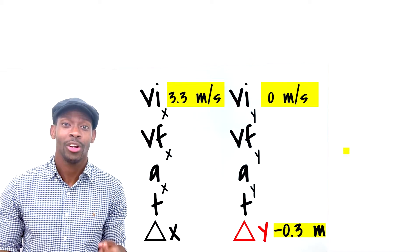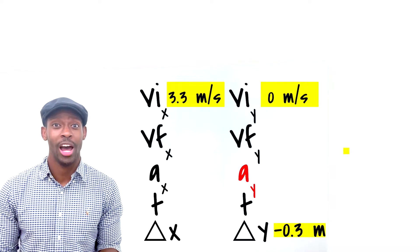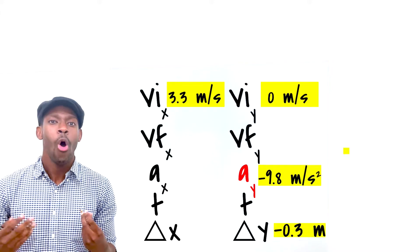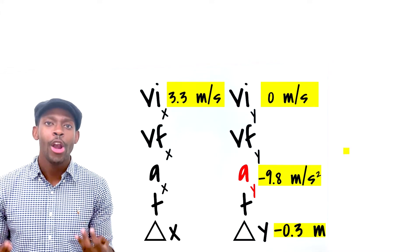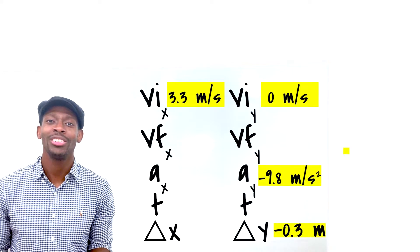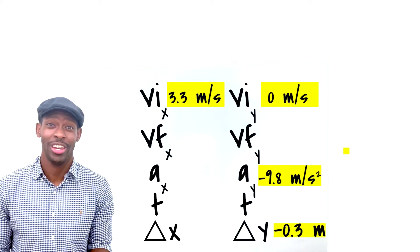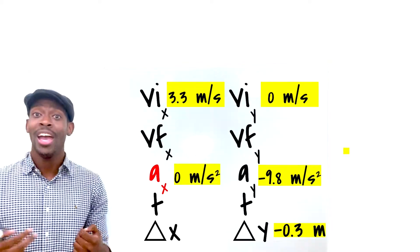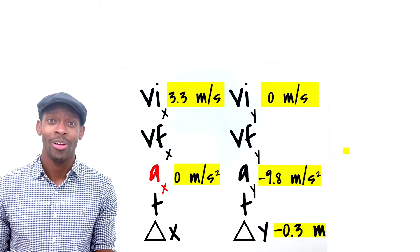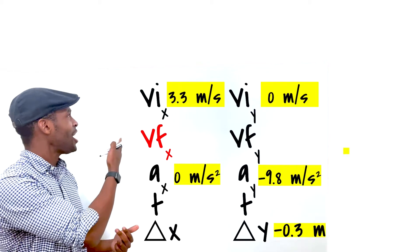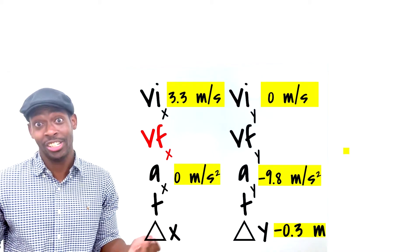What else can we do? We know on the y-axis, gravity is accelerating all objects downward at negative 9.8 meters per second squared. On the x-axis, there are no forces causing the velocity to change, which means if there's no change in velocity on the x-axis, acceleration is zero. And if acceleration is zero, that means the final velocity on the x-axis has to be the same as the initial velocity if it's not changing.